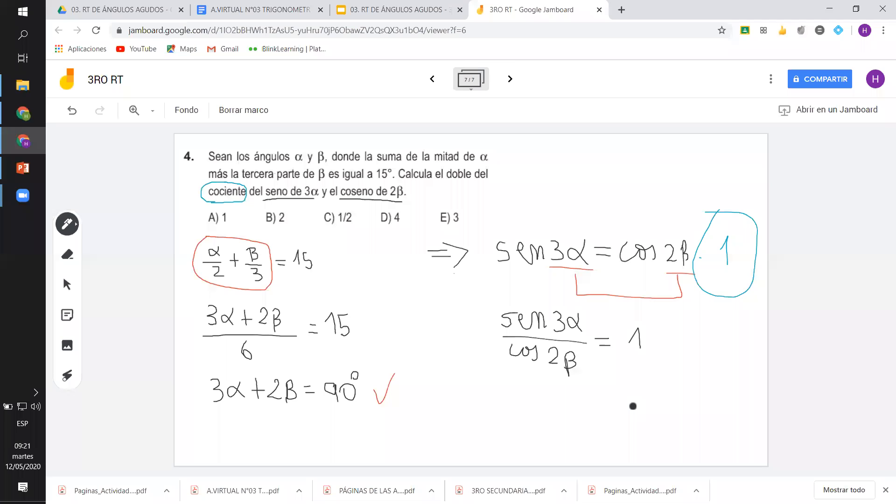Entonces, yo lo pasaría dividiendo. El 1, seno de 3 alfa, entre el coseno de 2 beta. ¿Y eso a qué es igual? A 1. Mi respuesta será 1. Estoy hallando el cociente. ¿Es lo que me pide o no? Jalado. Porque dice, calcula el doble. ¿Por qué? Si el cociente te ha salido 1, ¿cuál es el doble del cociente? 2. Ya, listo. Salió la respuesta. Entonces, el doble del cociente, respuesta, 2.